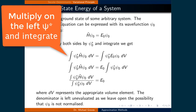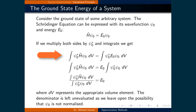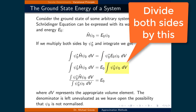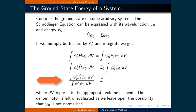If we multiply both sides by psi0-star and integrate, we get the integral of psi0-star times the Hamiltonian times psi0 times dv, equal to the integral of psi0-star times the ground state energy times psi0 times dv, where dv represents the appropriate volume element. On the right-hand side, E0 is a constant, so it can come out of the integral. Dividing both sides by the integral of psi0-star times psi0 dv gives us E0.